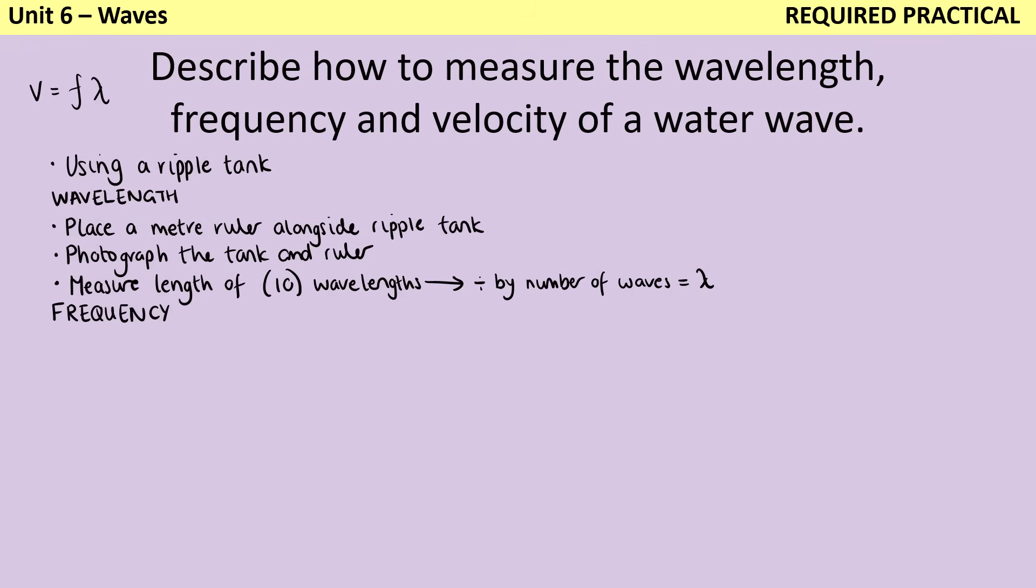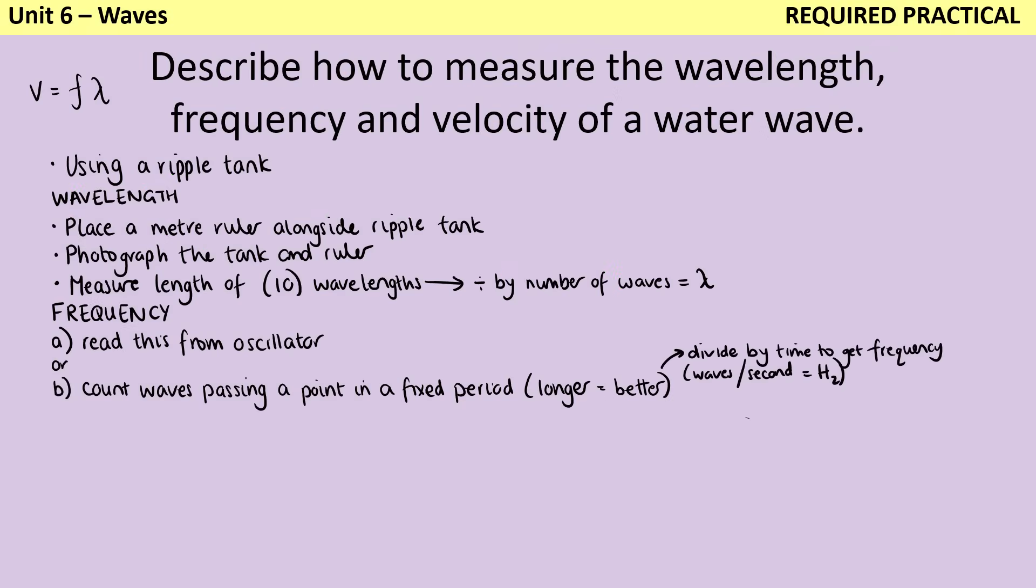To work out the frequency, we could either read this directly from the oscillator, or we could count the number of waves that are passing a point in a fixed period. And as we've said, the longer the period, the better it is. So we would then need to divide the time to get the frequency.